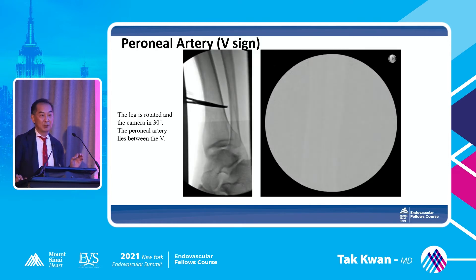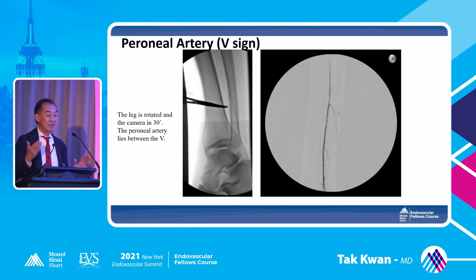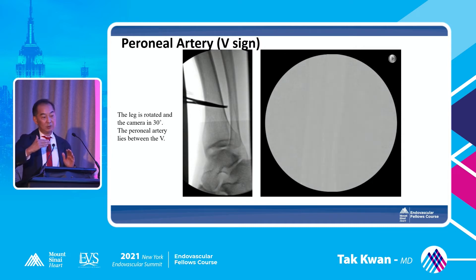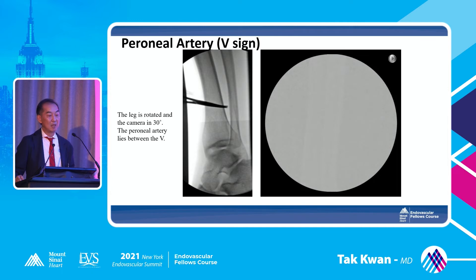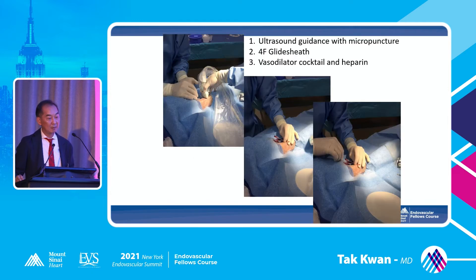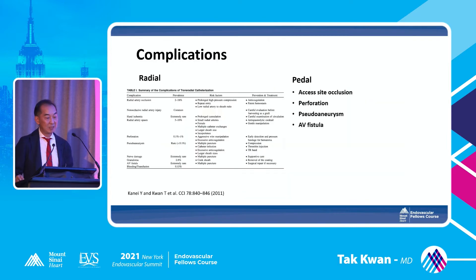The peroneal is a little bit tricky — usually we don't know exactly where the peroneal is lying. We call it the V-side technique: internally rotate the leg toward you, and angle the camera about 30 degrees to the other side, and puncture between the V. This is how the peroneal is located. It needs some training. After you put the puncture in: guide sheath, vasodilator, heparin — everything very similar.